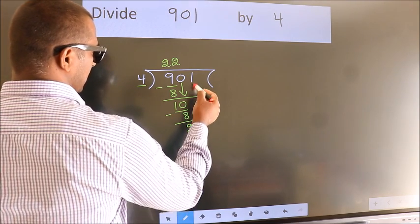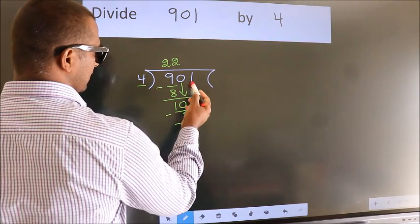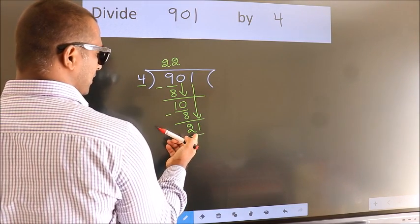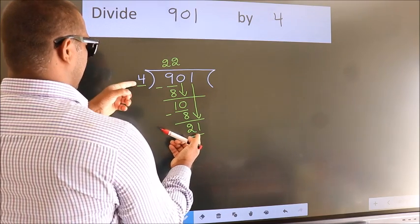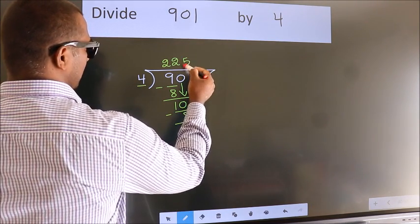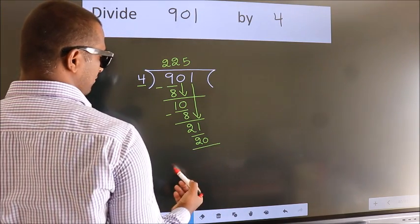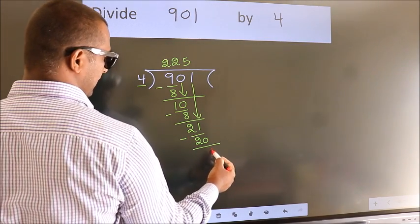After this, bring down the beside number. So, 1 down. So, 21. A number close to 21 in 4 table is 4 fives, 20. Now, we subtract. We get 1.